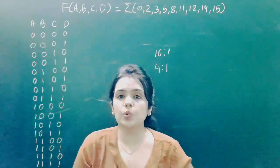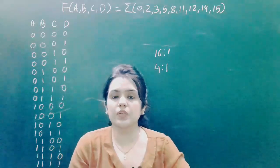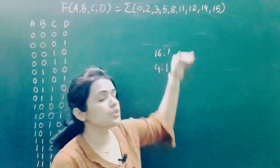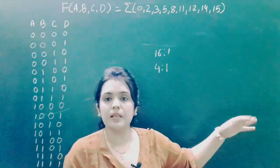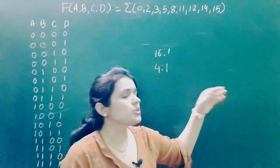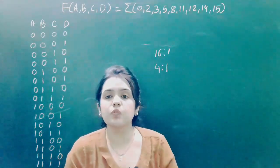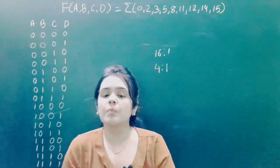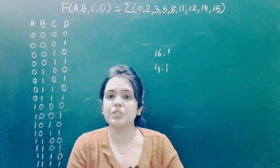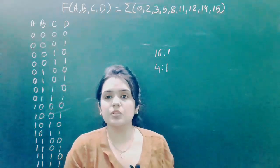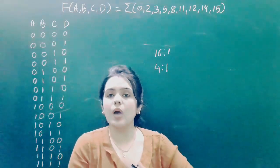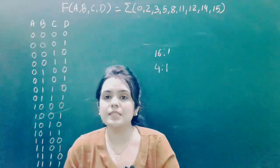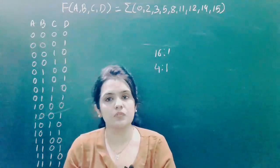As mentioned in other videos, if the question paper specifies which multiplexer to use — 16-to-1, 4-to-1, or 8-to-1 — then you must follow the question paper. But if no multiplexer is specified, then you follow the standard rule, which we already covered in the previous video.